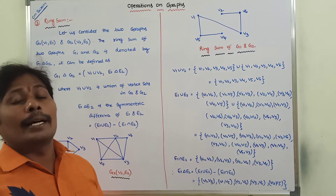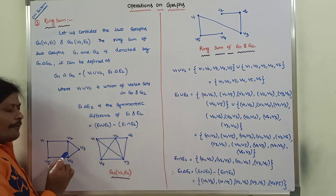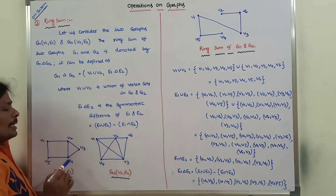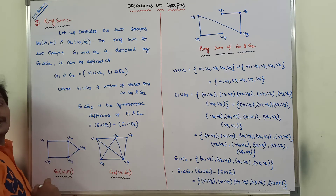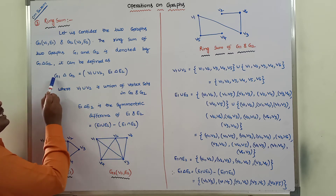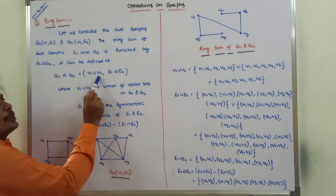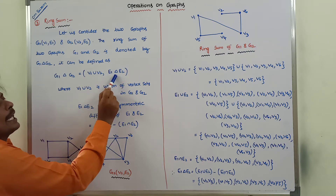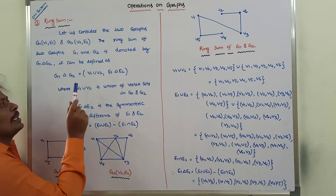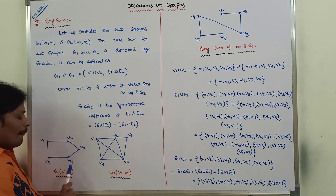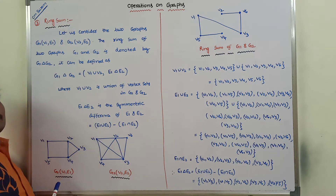The third operation is a ring sum. This is graph G1 and this is graph G2. The ring sum of graph G1 and G2 is denoted by G1 delta G2, equal to V1 union V2, comma E1 delta E2. Where V1 union V2 is nothing but the union of vertex sets V1 and V2 in graphs G1 and G2.